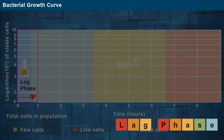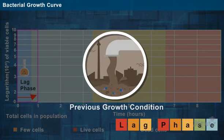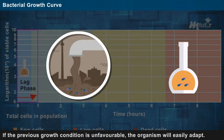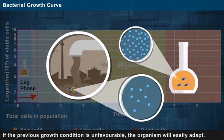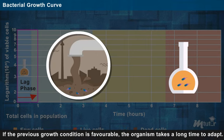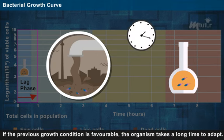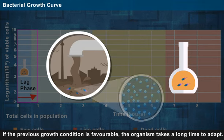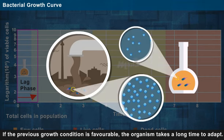The period of lag phase depends on the previous growth condition of the organism. If the previous growth condition is unfavorable, the organism will easily adapt to the new environment as the nutrients required are readily available for utilization. If the previous growth condition is favorable, the organism takes a long time to adapt as the organism does not necessarily need the available nutrients. It may use them only when required.